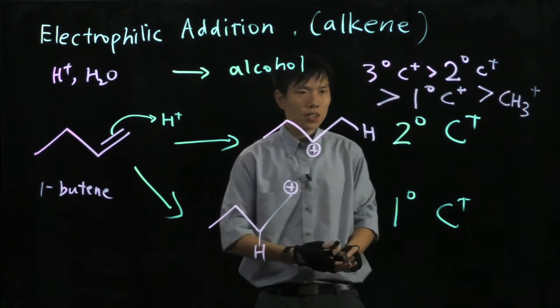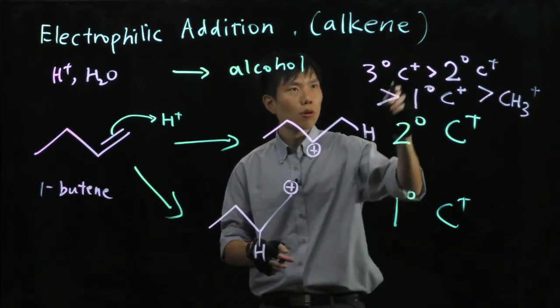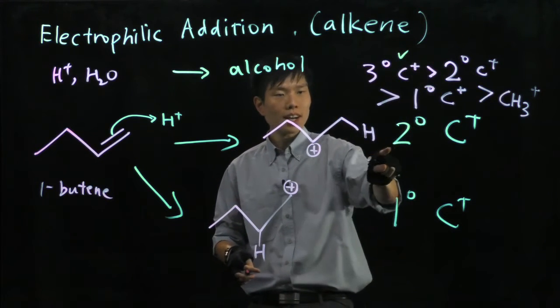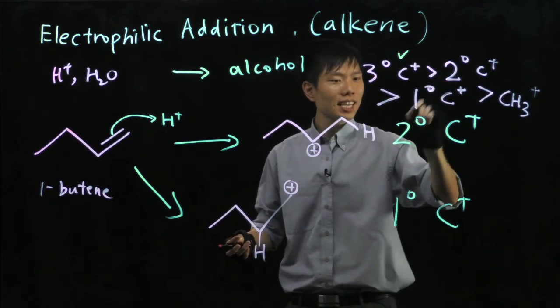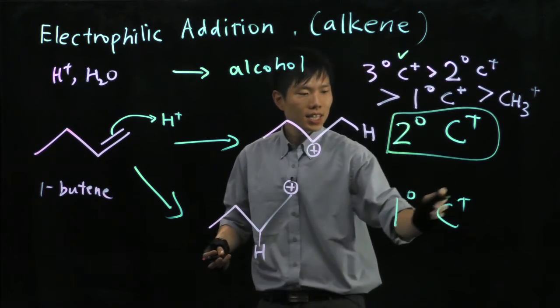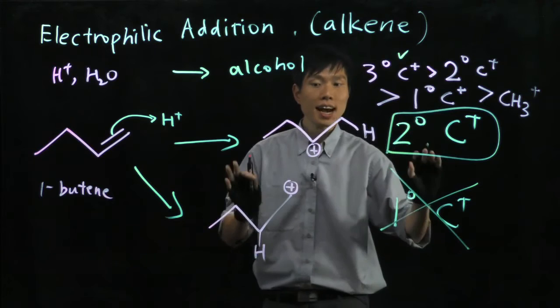If we have a choice, we will prefer to form the more stable carbocation here. But I can't do that in this case. But the next best thing will be a secondary carbocation. Which means that this would not be formed because it's unstable.